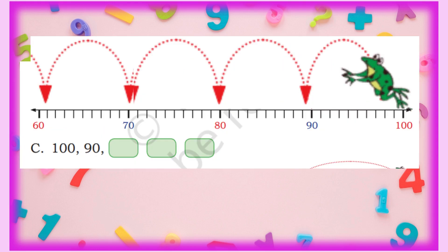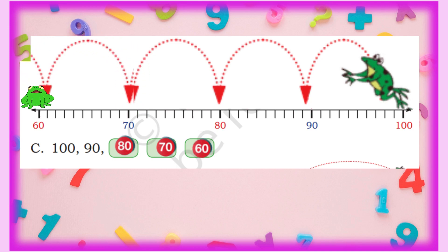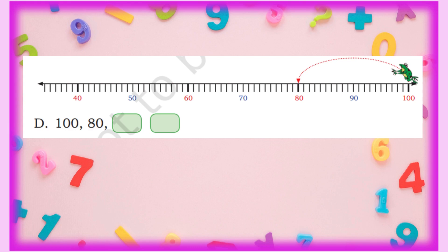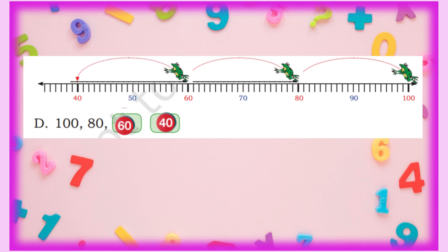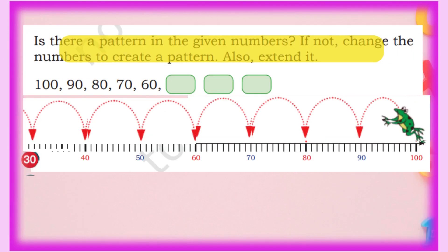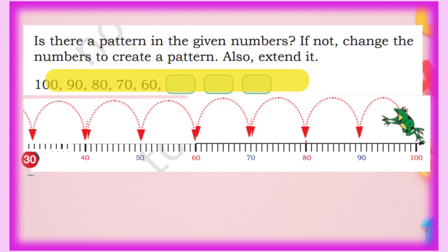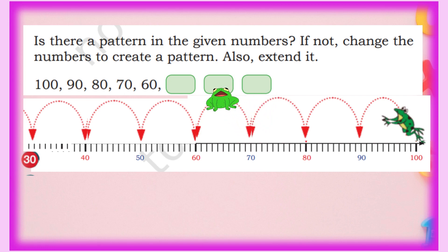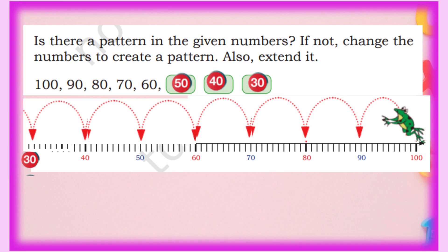Next: the frog starts from 100. First sequence has a gap of 10: 90, 80, 70, 60. Second sequence starts at 100 with a gap of 20: 80, 60, 40. Next, a number series is given: 100, 90, 80, 70, 60. There is a pattern — going backward in gaps of 10. So we extend it: 50, 40, 30. We complete and extend this series.